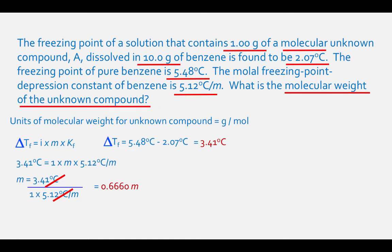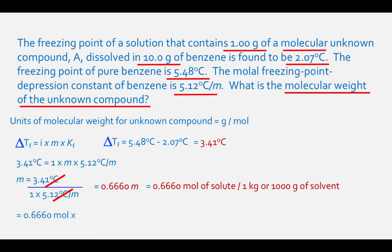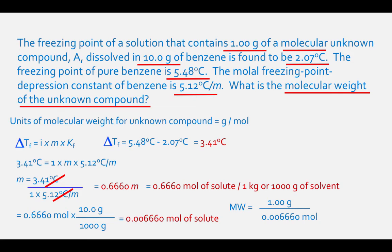We have 0.6660 moles of solute per 1,000 grams of solvent, but we only have 10.0 grams of solvent. So 0.6660 moles divided by 1,000 grams times 10.0 grams equals 0.006660 moles of solute. Since we have 1.00 gram of solute, dividing by the moles gives: 1.00 gram divided by 0.006660 moles equals 150 grams per mole, rounded to 3 significant figures.